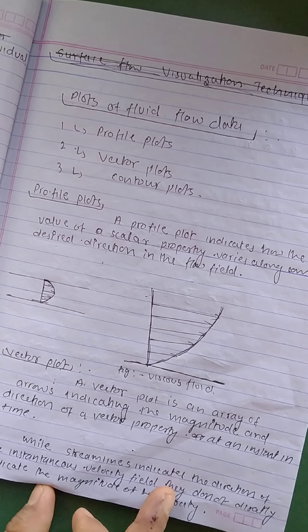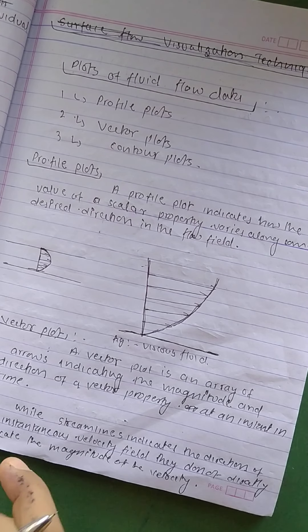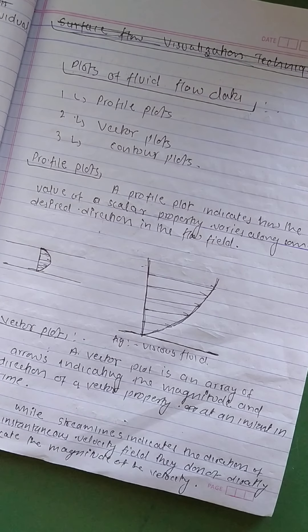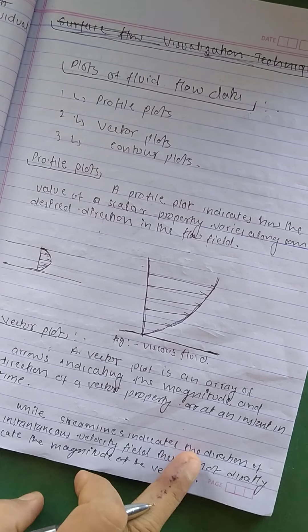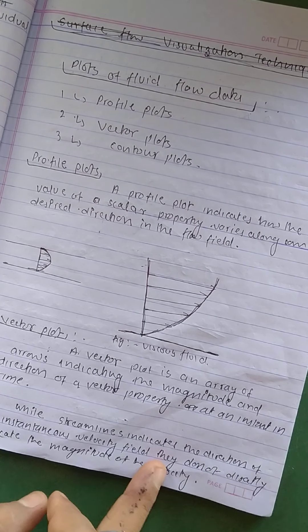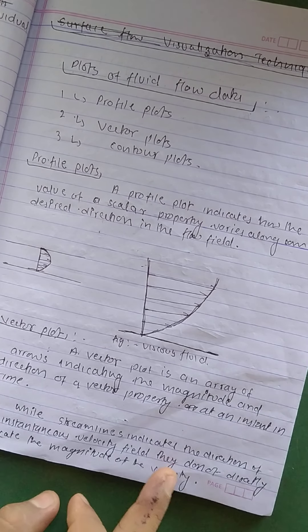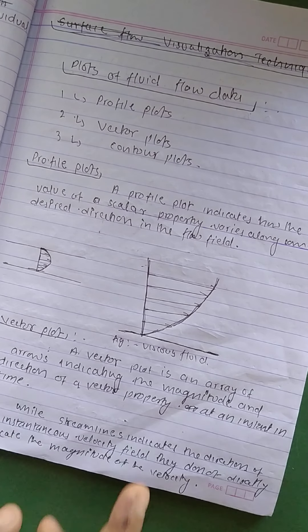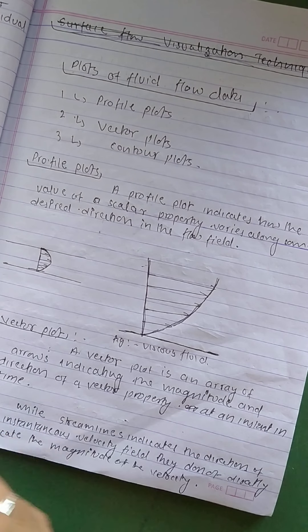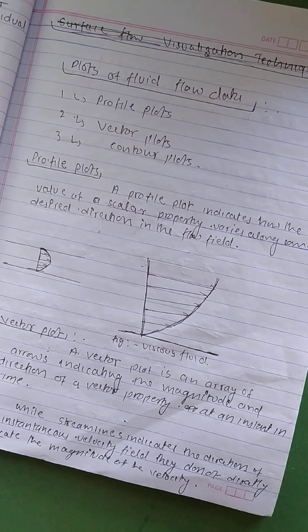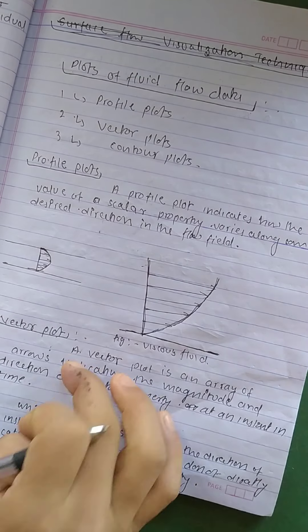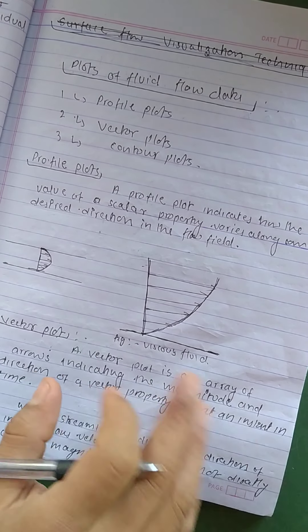While streamlines indicate the direction, what is the difference between vector plot and streamline? While streamlines indicate the direction of the instantaneous velocity field, they do not directly indicate the magnitude of the velocity. This is the difference between the streamline and vector plot.